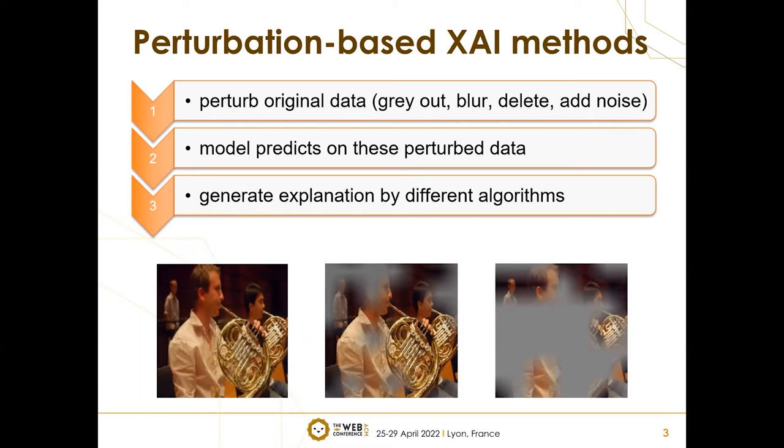First, perturb original data in some ways, like graying out, blurring, deleting, or adding some noises. Then, the model that needs to be explained will give prediction results on this perturbed data. Lastly, different algorithms conceive different methods to generate the final explanations.